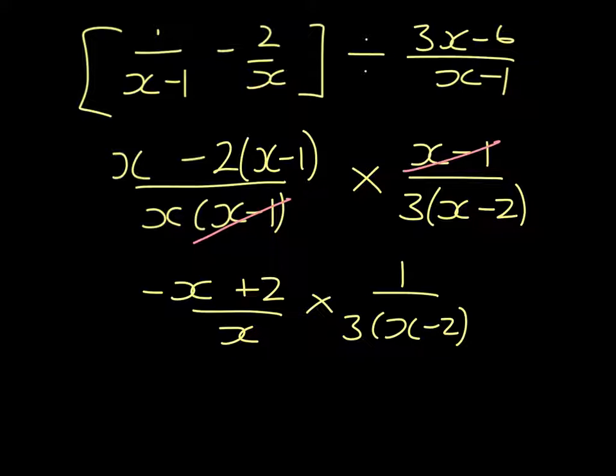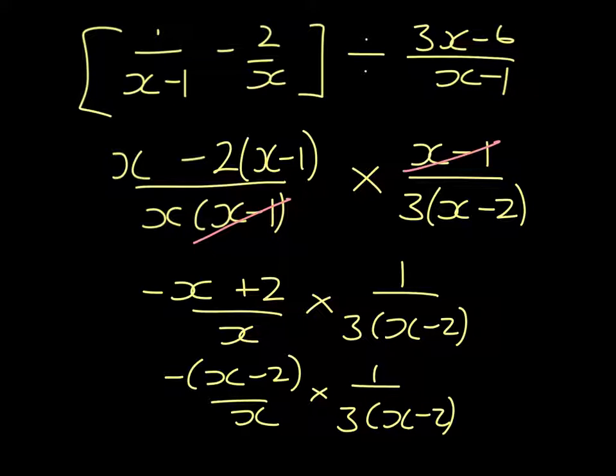My first numerator, I can factorise by taking out a factor of minus 1. Now I have x minus 2s that cancel, and that leaves me with minus 1 over 3x.